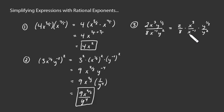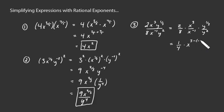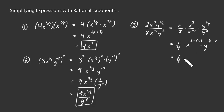We now have a quotient of powers with the same base, so we can rewrite this with that base x to a new exponent — the difference of the two previous exponents. Let's reduce 2 eighths to 1 fourth. Then we have x to the 3 minus negative 1 power, times y to the 1 third minus 2 power. Simplifying: 3 minus negative 1 is 4, giving x to the fourth. For y: 1 third minus 2 equals 1 third minus 6 thirds, which is negative 5 thirds.